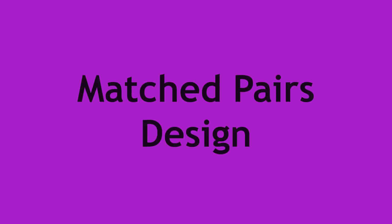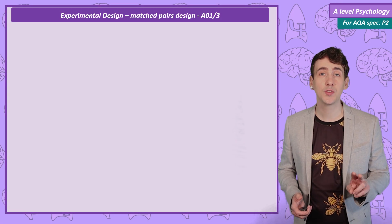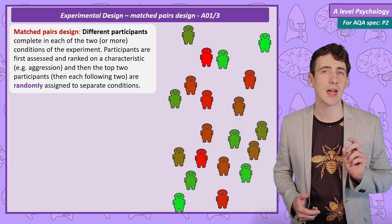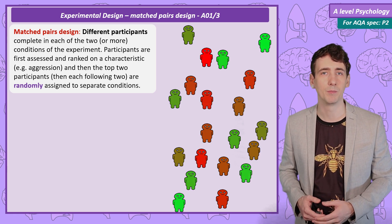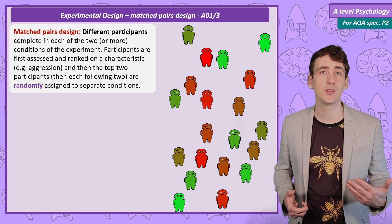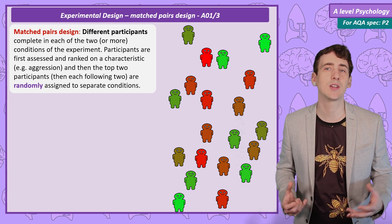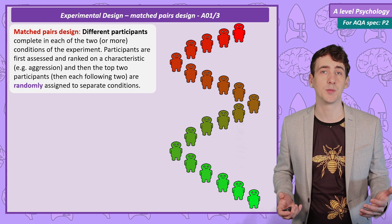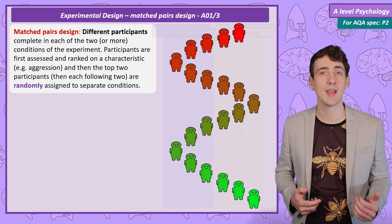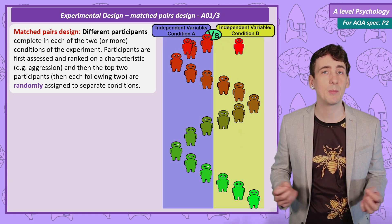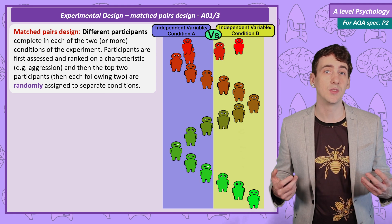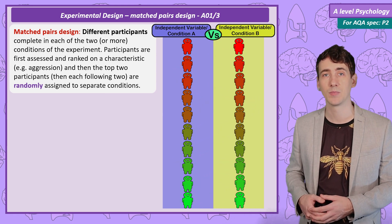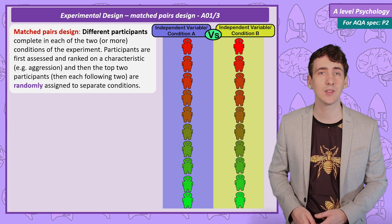Matched pairs design. In a matched pairs design, two separate groups of participants are used, one for each condition. But the researcher decides on a characteristic that might influence the result — depending on the study, it might be IQ, age, or something like aggression levels. This is measured before the study begins. We can then rank our participants, randomly assign the highest scoring two to separate conditions, and do the same for the next two, continuing until all participants are assigned, giving two groups balanced for that characteristic.